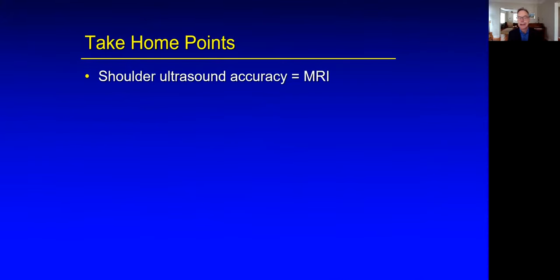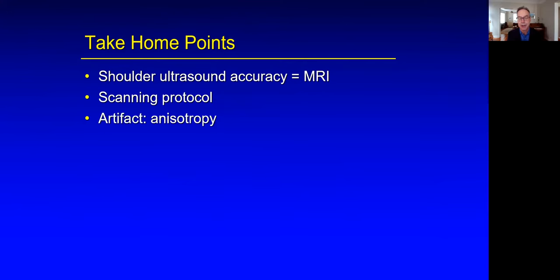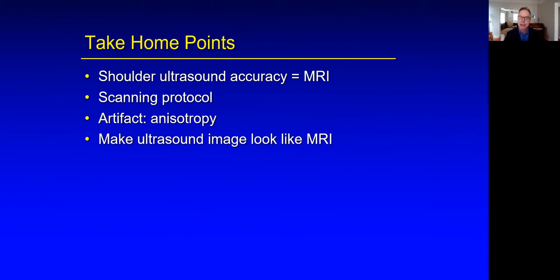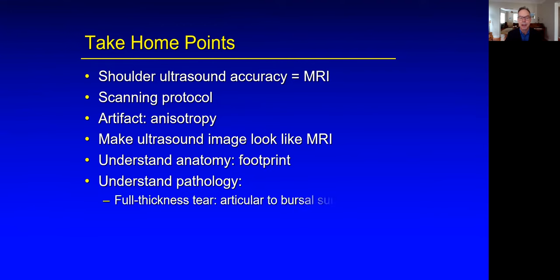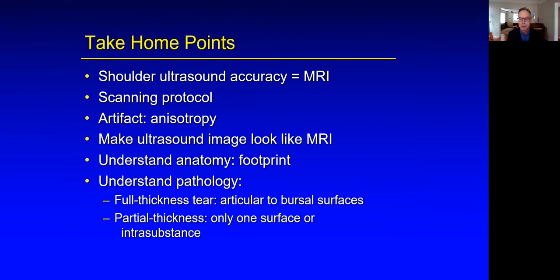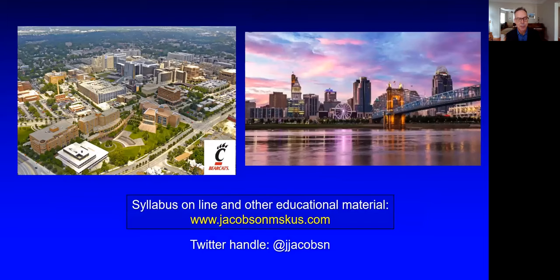Take-home points: Number one, ultrasound accuracy for rotator cuff is equal to MR. You need to have a scanning protocol, which takes practice. Be aware of artifacts, which is anisotropy. Make sure the ultrasound image looks like the MR image and vice versa — you want the tendon in long and short axis without artifact, just like MR. Understand the anatomy, specifically the footprint. Understand the pathology: full thickness tears go from bursal to articular surface; partial tears will only go to one surface or will be intra-substance. Thank you very much for your attention.